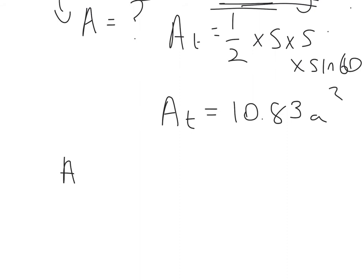To find the area of the hexagon then, that's 6 multiplied by 10.83, since there's six of those triangles. And that will give me 64.98 square centimeters.